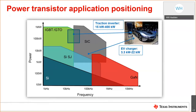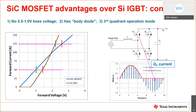When we look at the traction inverter market, it really fits into a range around 10 kilohertz, and as you go faster we get up into the silicon carbide range. The power ratings of these applications require both IGBT and silicon carbide. As things move forward, silicon carbide has some advantages over the IGBT: it has a knee voltage advantage, and it has a body diode which enables third-quadrant operation without the use of an additional diode, helping to improve conduction losses versus IGBT.